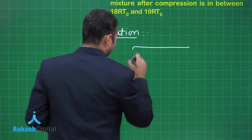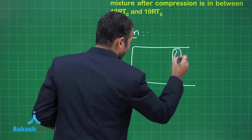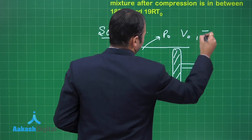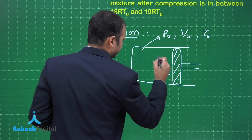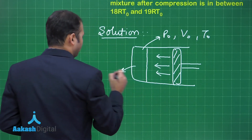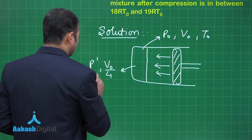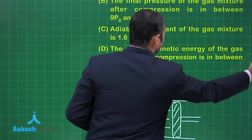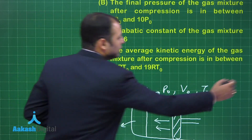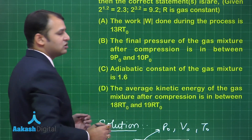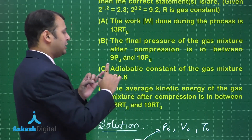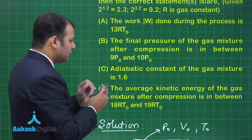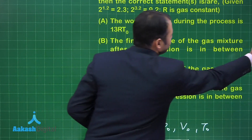There is a piston fitted in the container. Initially it was at pressure P₀, volume V₀, and temperature T₀. Later the piston is compressed to volume V₀/4, giving new pressure P′ and new temperature T′. The four options ask about: (1) work done during the process, (2) the final pressure, (3) the adiabatic constant of the gas mixture, and (4) the average kinetic energy after compression.